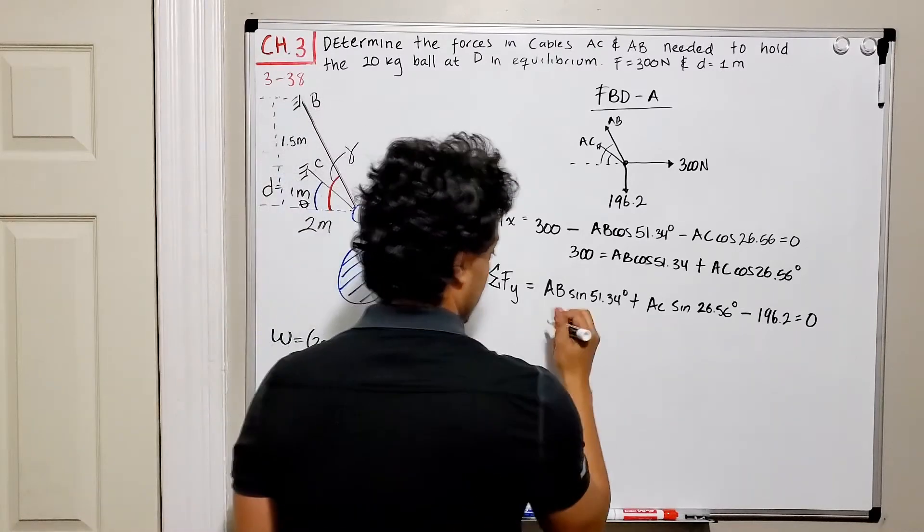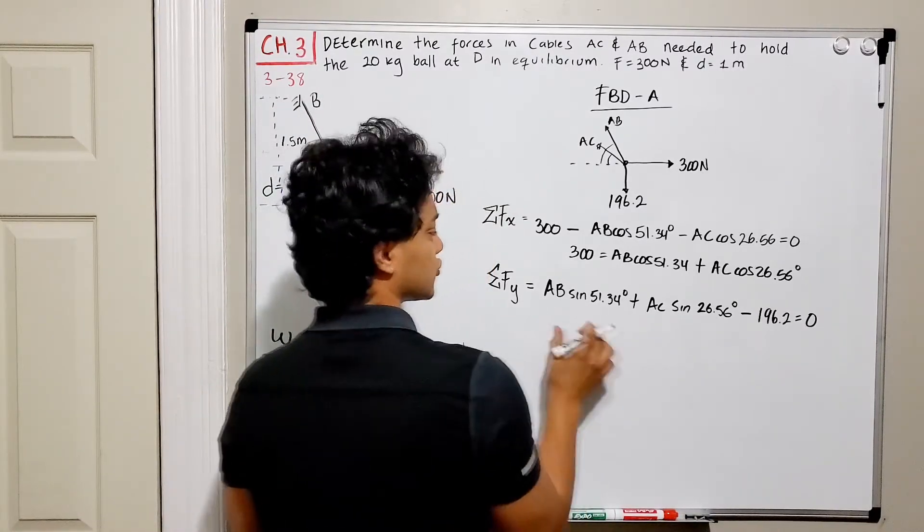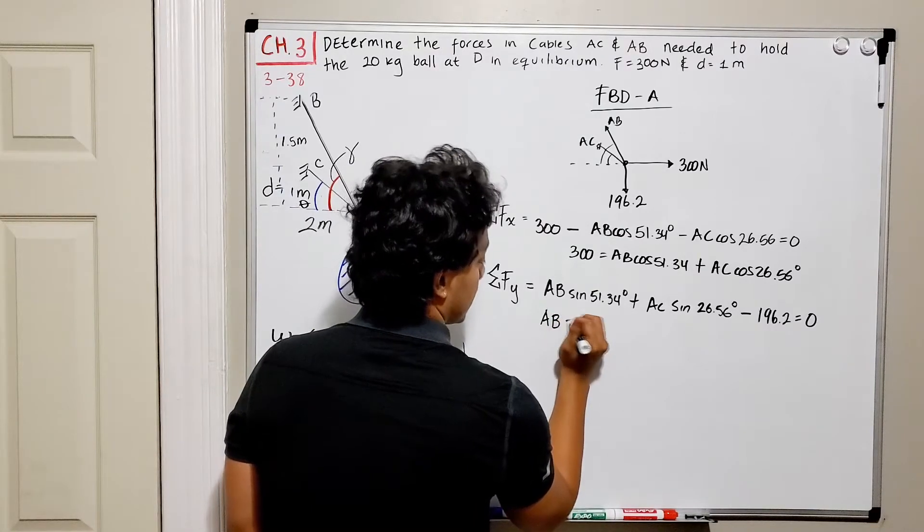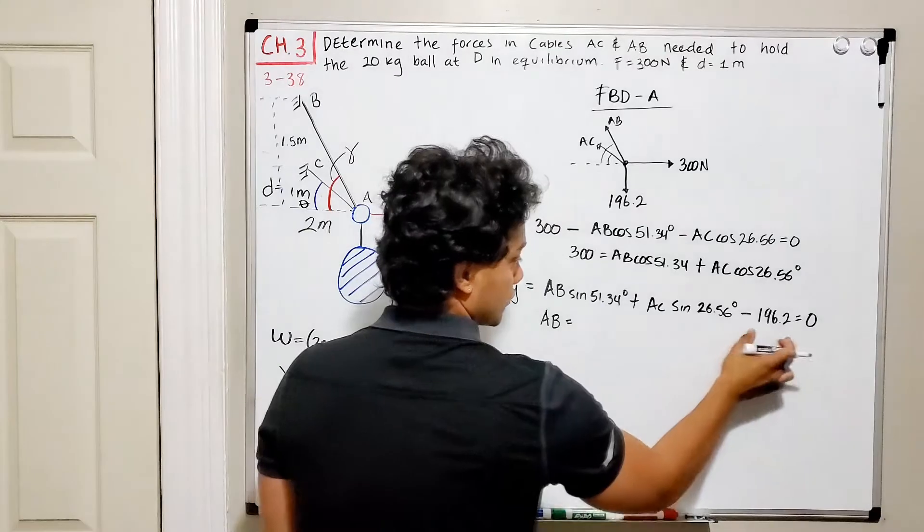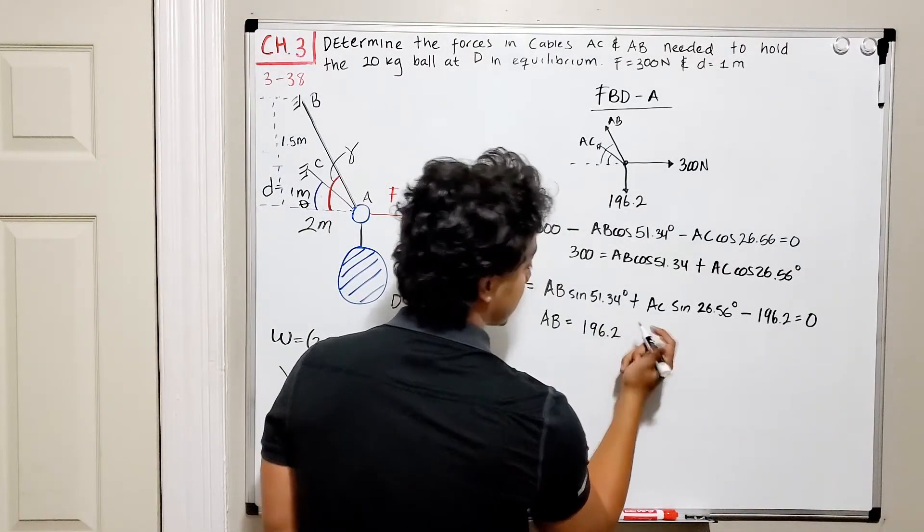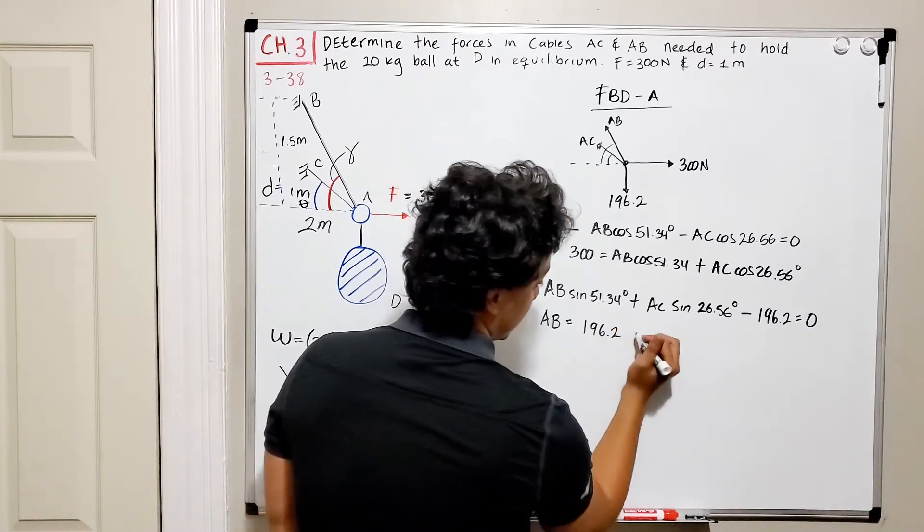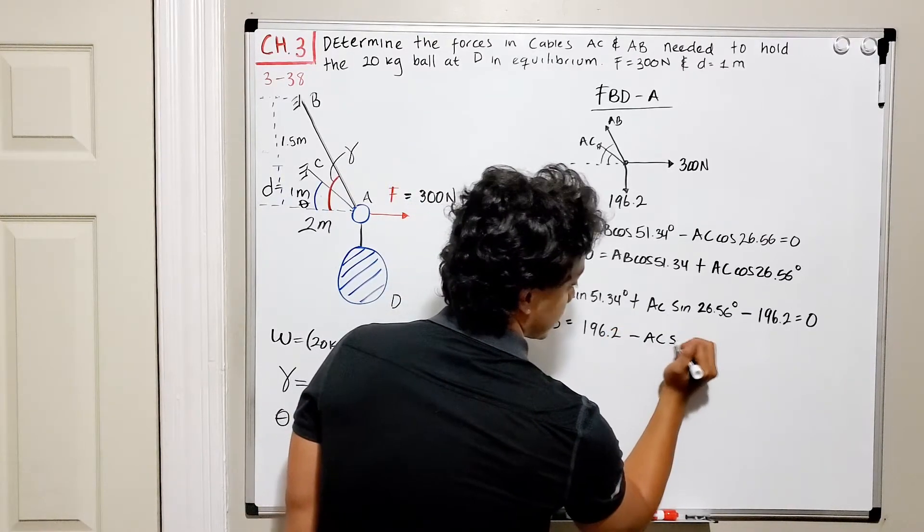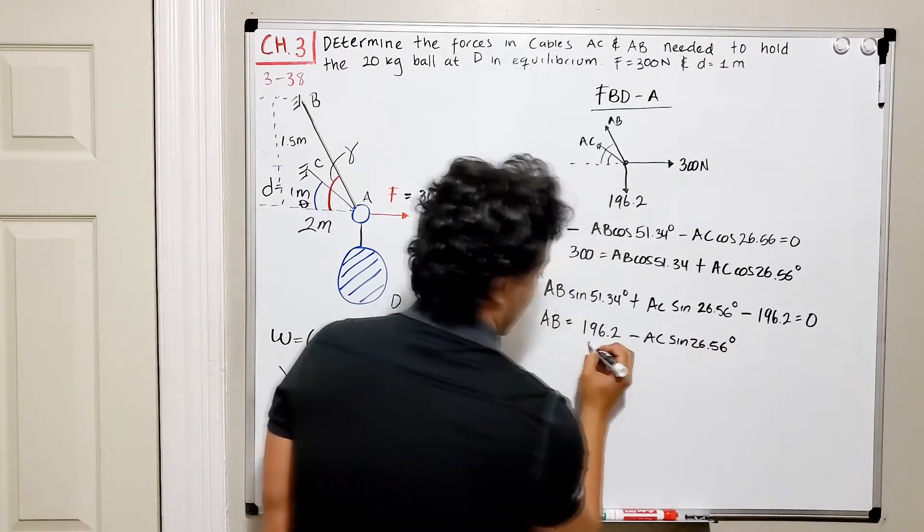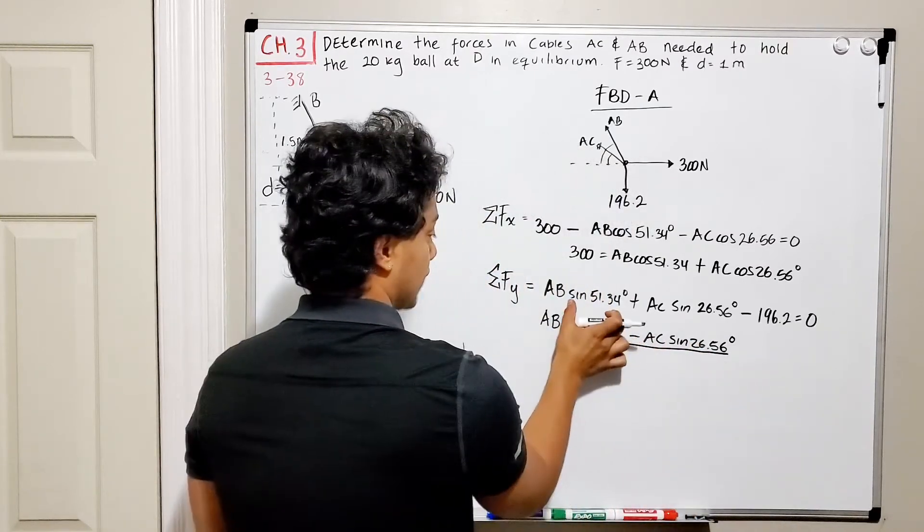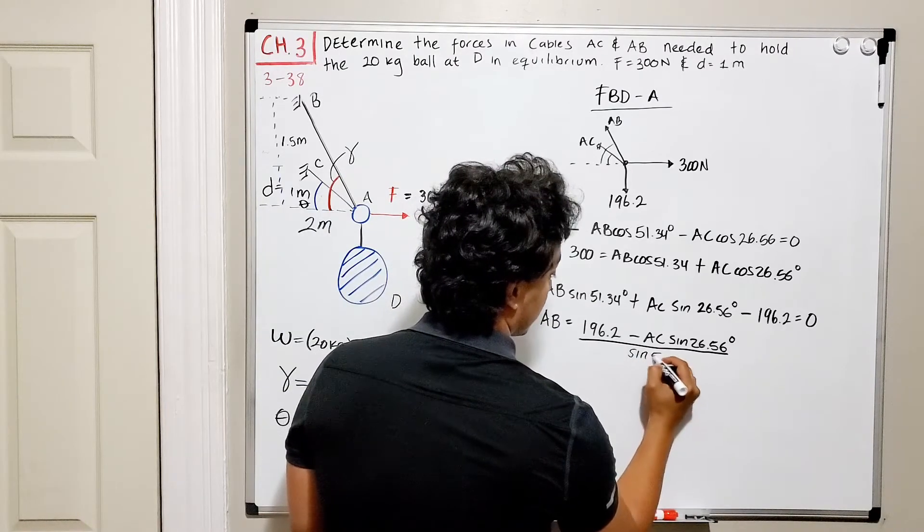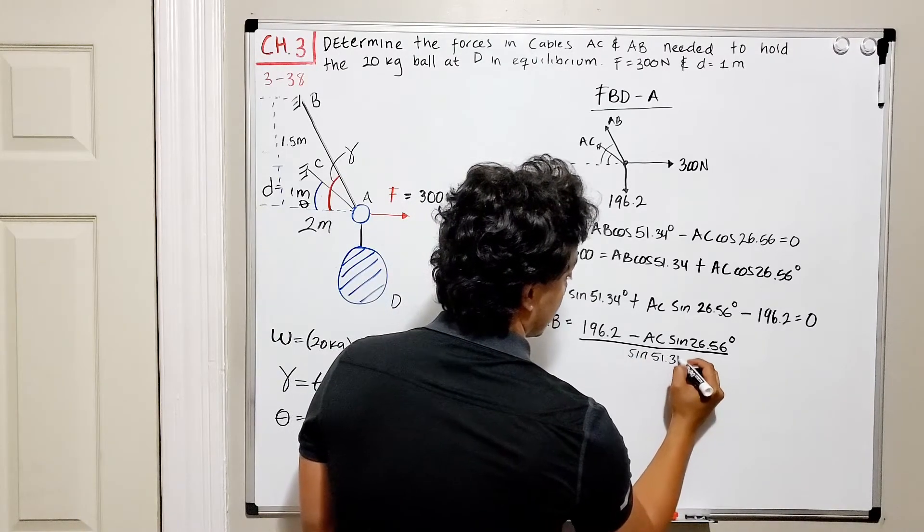Now we rearrange this guy. Let's just solve for AB in this equation. So AB is going to be equal to, if we pass this guy to the other side, it's going to become positive, so 196.2 positive. This positive is going to become negative, so minus AC multiplied by the sine of 26.56, and all divided by the sine of 51.34 degrees.